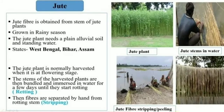The next plant fiber is jute. Jute fiber is obtained from the stem of jute plants grown in the rainy season. The jute plant needs plain alluvial soil and standing water. The states which produce jute are West Bengal, Bihar, and Assam. The jute plant is normally harvested at the flowering stage. The stems of the harvested plants are then bundled and immersed in water for a few days until they start rotting — this is called retting. Then fibers are separated by hand from the rotting stem, and this process is called stripping.